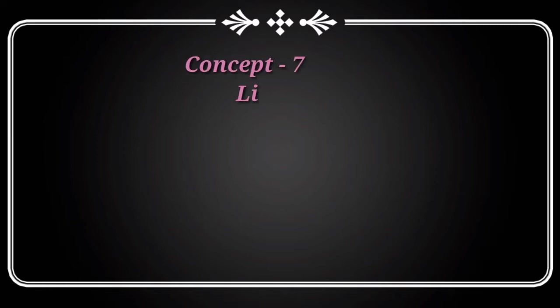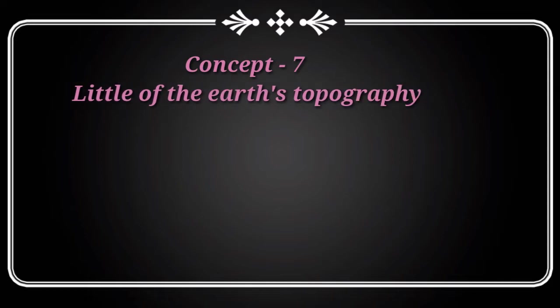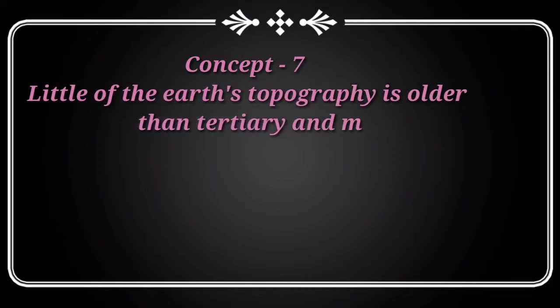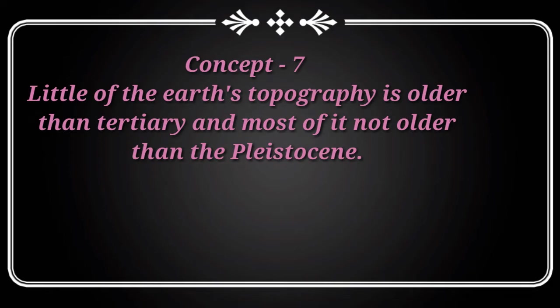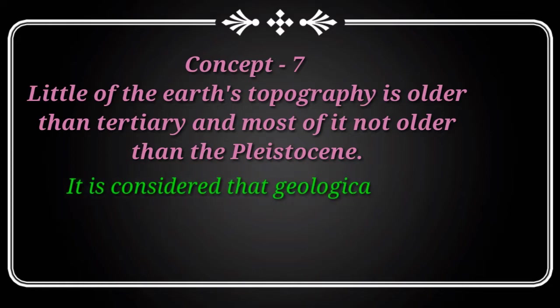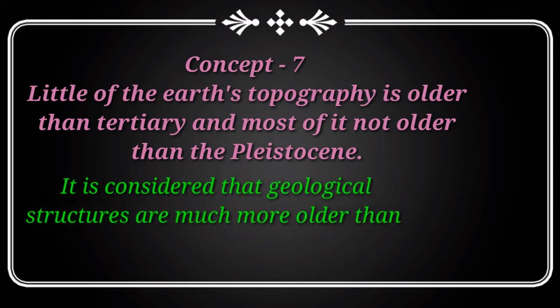Concept number seven states that little of the earth's topography is older than Tertiary, and most of it is not older than Pleistocene. Topographic features in their original form are rare; some exist but in exhausted form. It is considered that geological structures are much older than the topographic features.